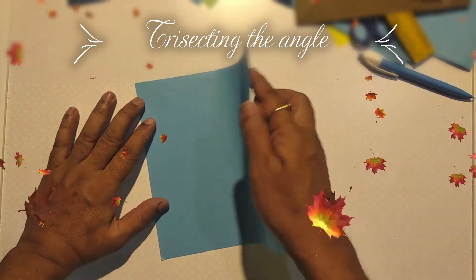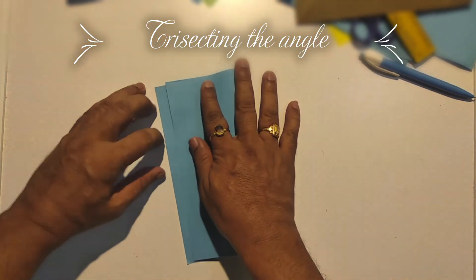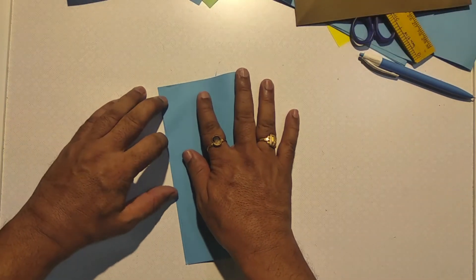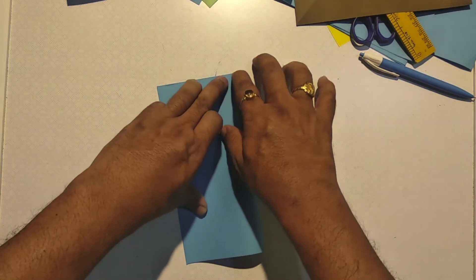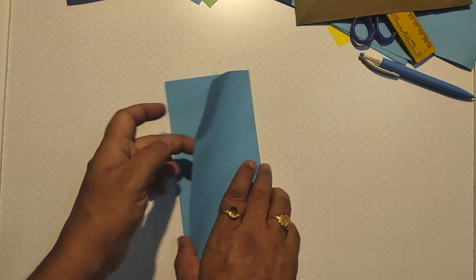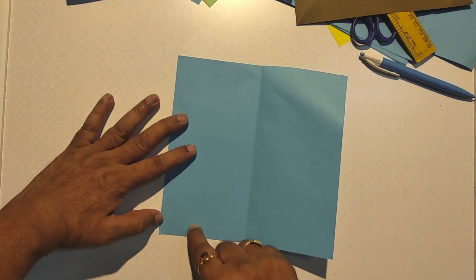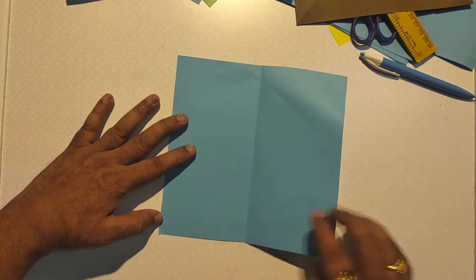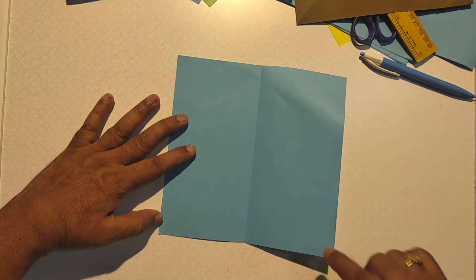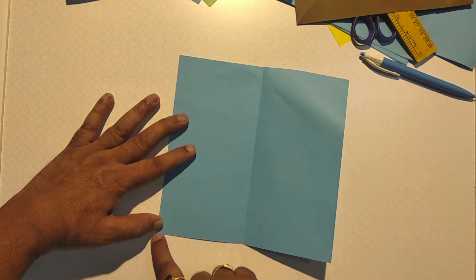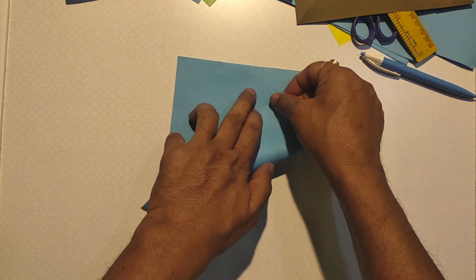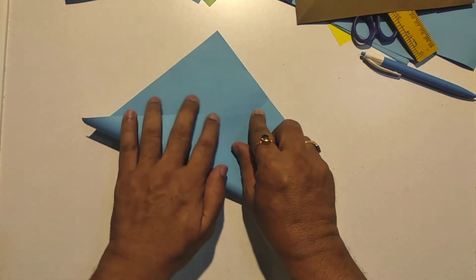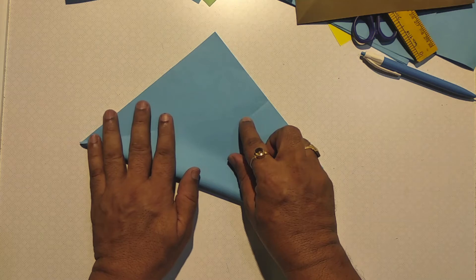Now trisect the angle of the square. For this, let us half the square and create a perpendicular line. Again, we will lift the right bottom corner of the paper onto this perpendicular line, starting from the left bottom corner.